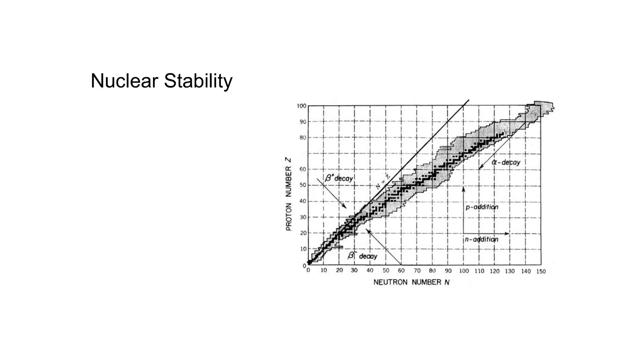The black dots are all of our elements and all of our atoms that exist naturally. So these are the atoms that are stable and exist in nature.